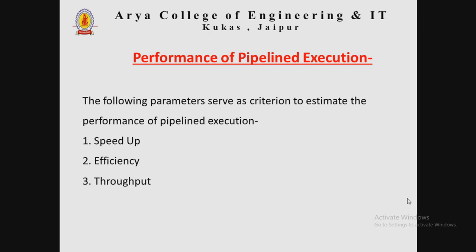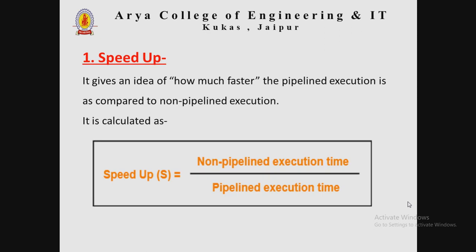There are some parameters to measure the performance of pipeline execution. The following parameters serve as the criteria to estimate the performance of pipeline execution: the first is speed up, the second is efficiency, and the third is known as throughput.